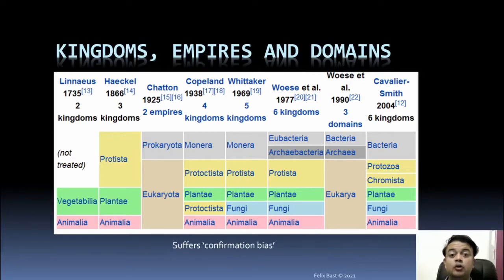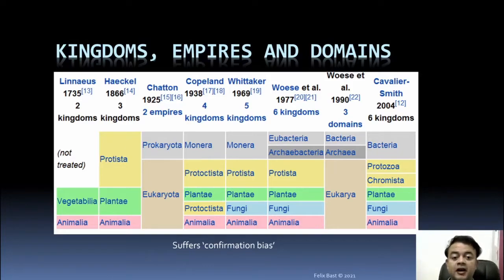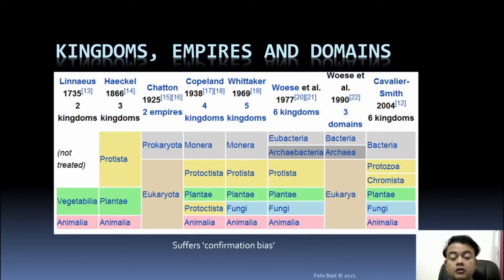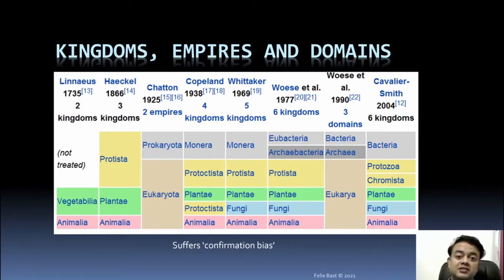The 1990 three-domain classification is completely based on ribosomal DNA sequences. Bacteria, Archaea, and Eukarya are the only three domains of life — which is even now considered to be accurate. Most textbooks these days follow Woese's three-domain classification.